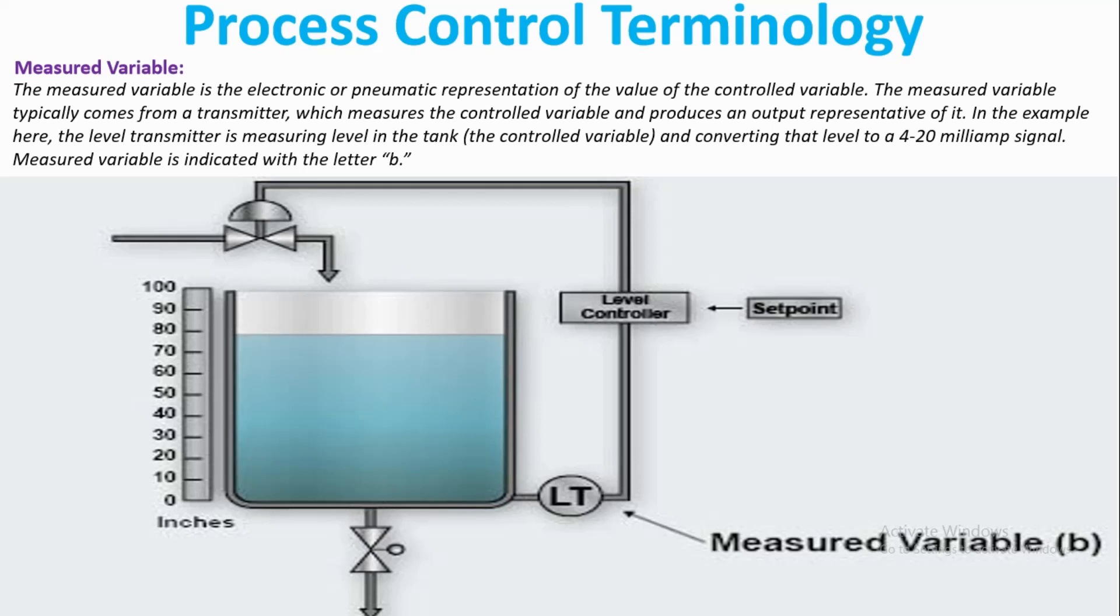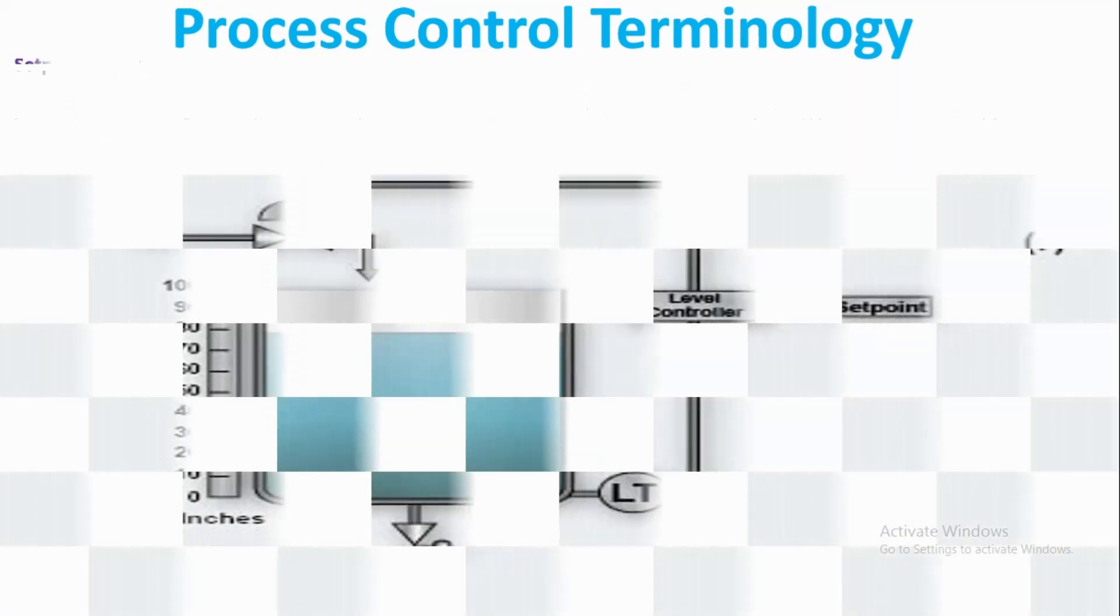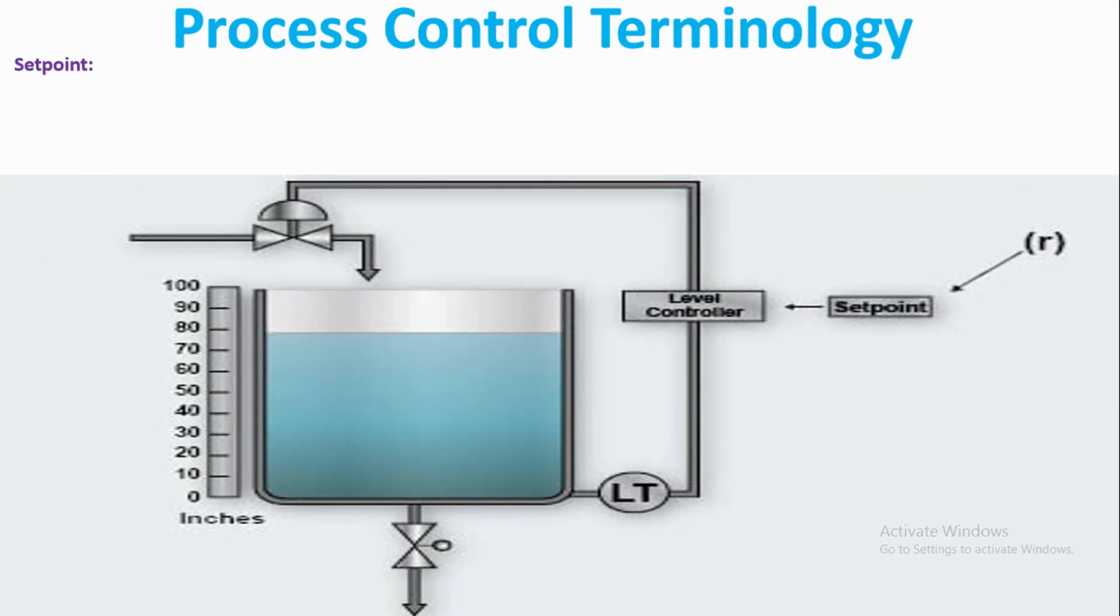Now we will see what a set point is. The measured variable is sent to the controller in the loop, which is compared to a desired value called the set point. The set point and the measured variable are compared in order to produce an error signal.